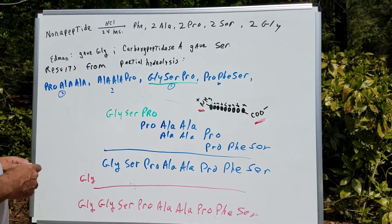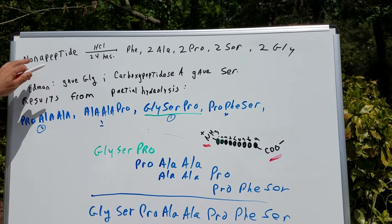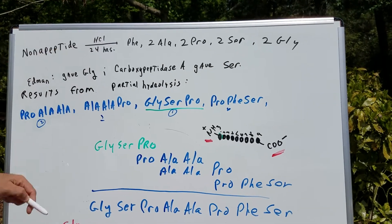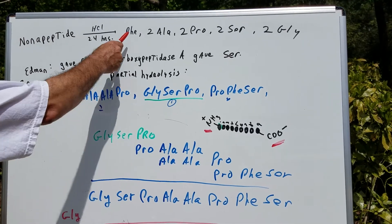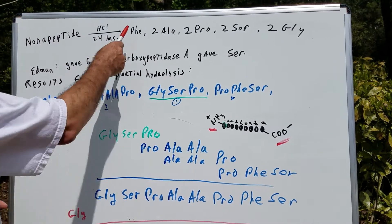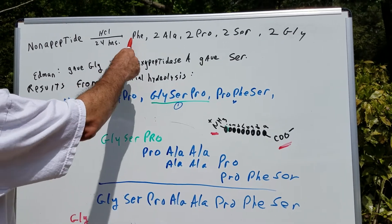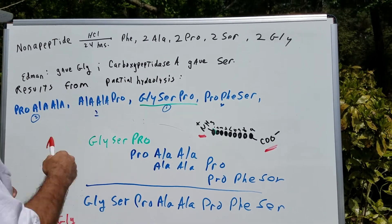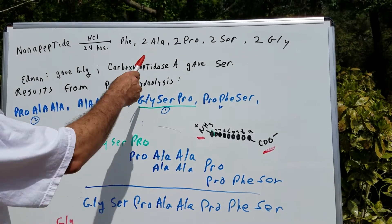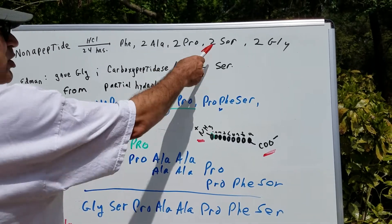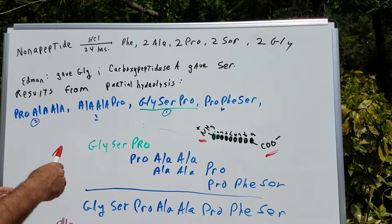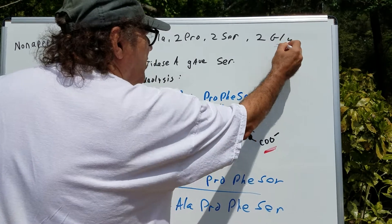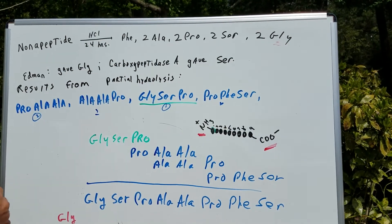What I'm going to do is take a nona peptide. Nona means it contains nine amino acids, and I'm going to treat it with HCl for 24 hours and blow the whole thing apart. And we get one phenylalanine — in biochemistry we call it just Phe — then two alanines, which we call Ala, two prolines, which we call Pro, two serines, which we abbreviate as Ser, and two glycines. By the way, glycine is the only optically inactive amino acid — a good question you should remember.